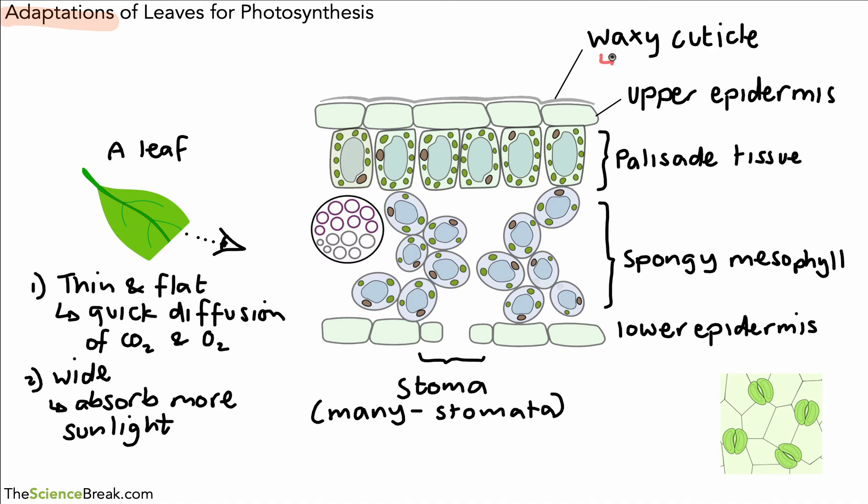So the waxy cuticle, the role of that is to prevent water loss. It's like a waterproof layer, so it prevents water being lost from the leaf. The upper epidermis, this is like a protective layer, so it's there for protection, but also important to remember that it is transparent. Transparent, that means it's see-through like glass.